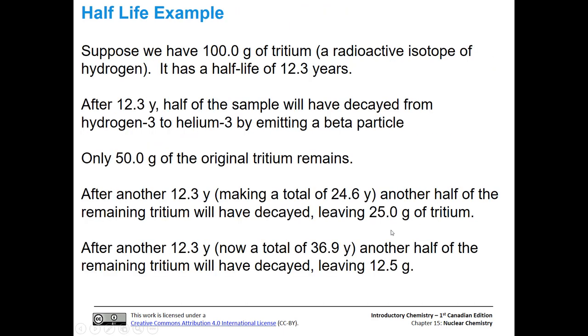Let's look at an example. We have a radioactive isotope of hydrogen, and that's called tritium. We have 100 grams of it, and tritium has a half-life of 12.3 years. After 12.3 years, then we will only have 50 grams, because half of it decayed from hydrogen-3 to helium-3 by emitting a beta particle.